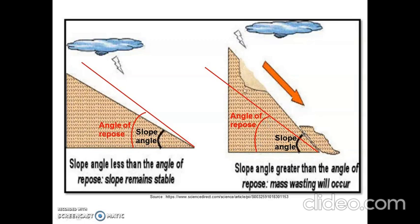In the second sketch, we can see that the angle of repose is less than the slope angle. Hence there will be failure of the soil mass. So the condition should be maintained such that the slope angle remains less than the angle of repose for it to be stable.